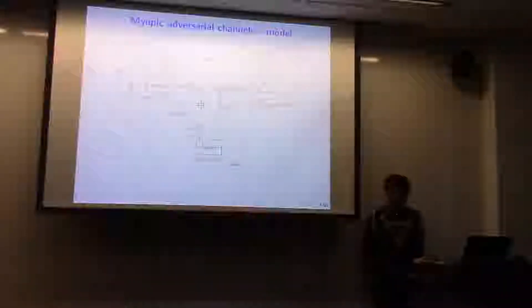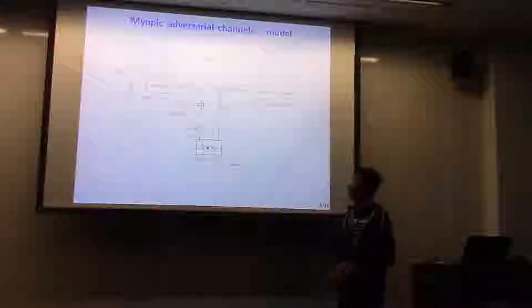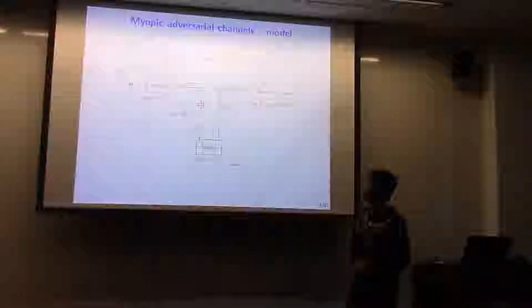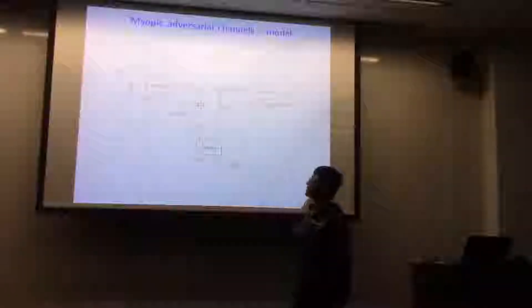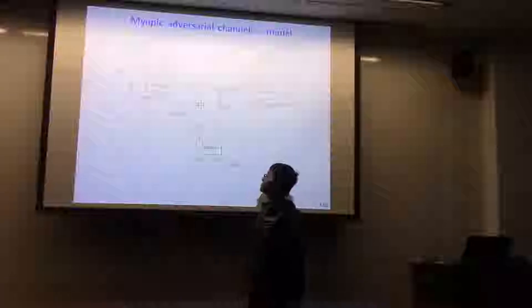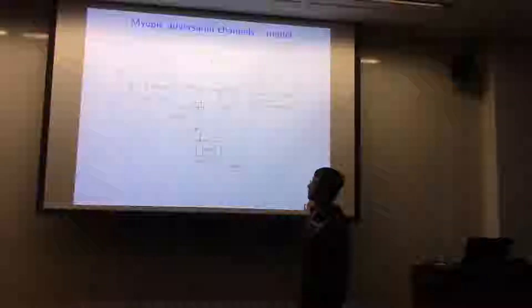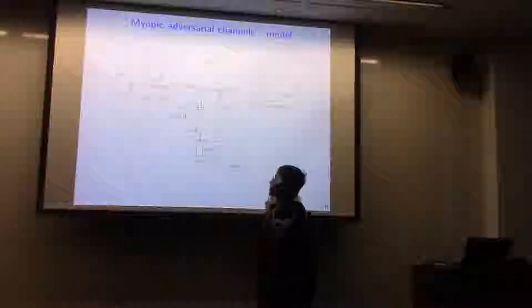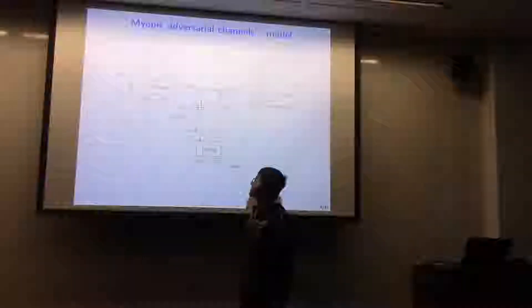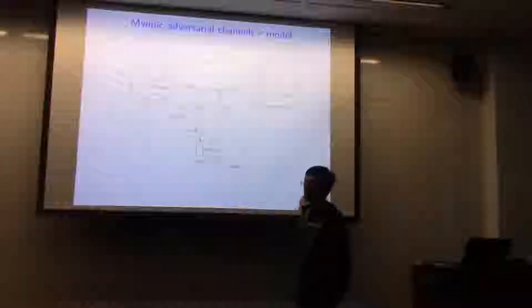Here's what's formally happening. Alice has a message M, a uniform binary string of length nR for some rate R between 0 and 1, which we want to maximize. To fight against the noise inside the channel, she encodes the message — the encoder is just a function that outputs a real vector of length n, slightly different from what you see in coding theory, and subject to some power constraints. The output of the encoder X should have bounded Euclidean norm — at most square root of nP for some number P given to you.